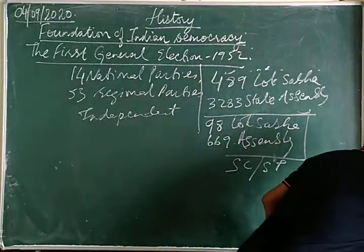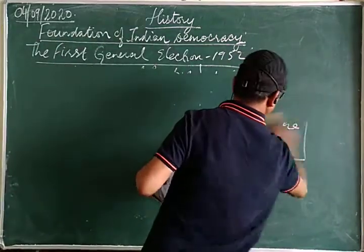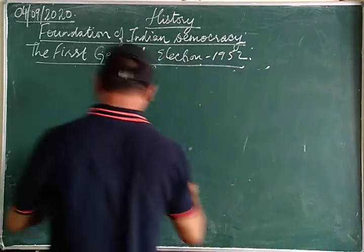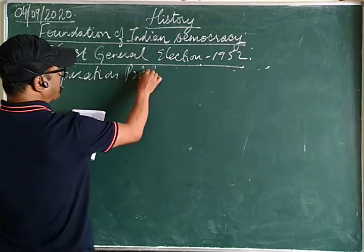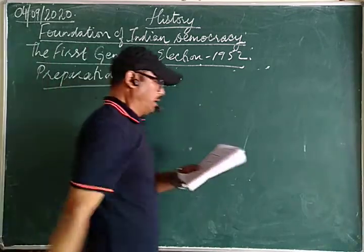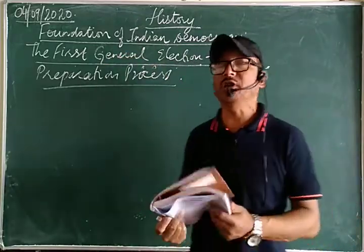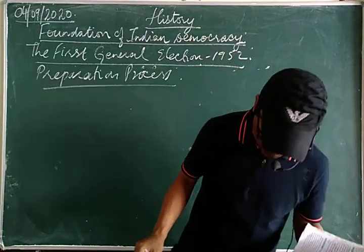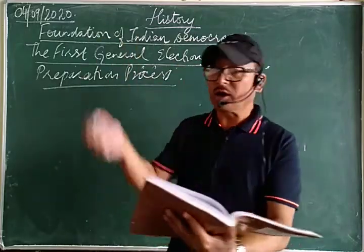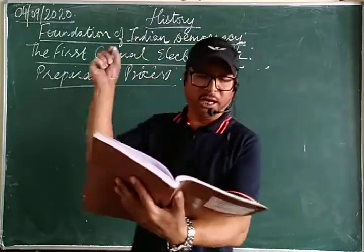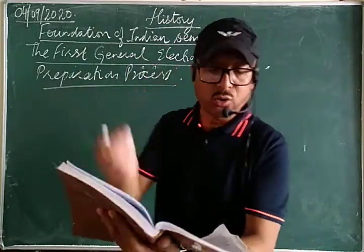Now let's see the preparation process — how the preparation was being done for this general election. It was a great task for the Indian Election Commission and the administration. It was not an easy walk, since the election was being held for the first time according to the new constitution. Sukumar Sen — please note down the name — was the first Chief Election Commissioner of independent India.